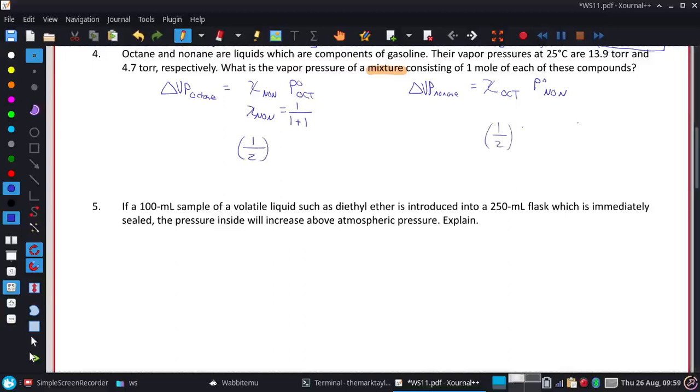And then over here for the octane, what I'm going to multiply this by is the vapor pressure of the octane, which is 13.9 torr. This one, I'm going to end up multiplying it by the vapor pressure of the nonane, which is 4.7 torr.